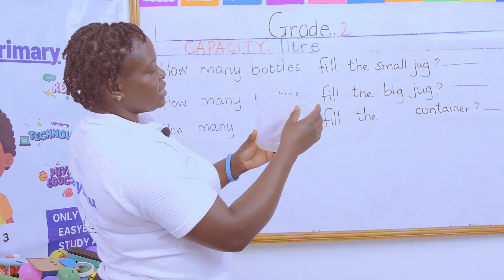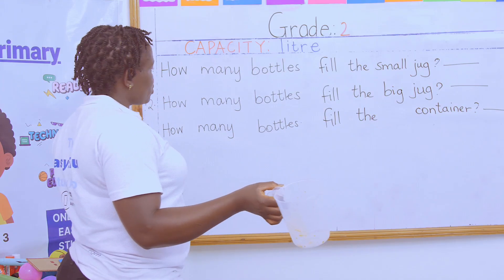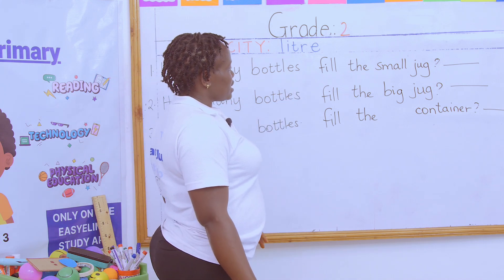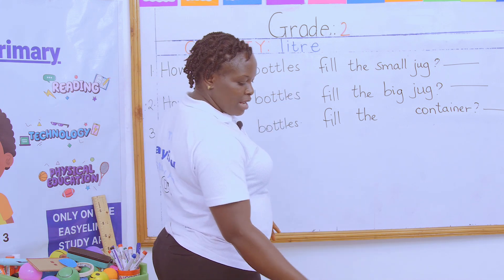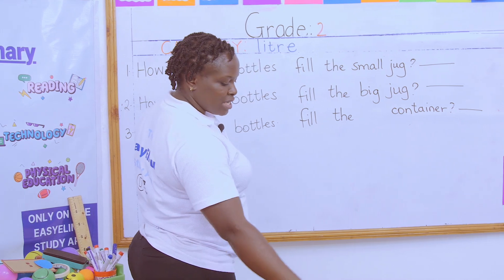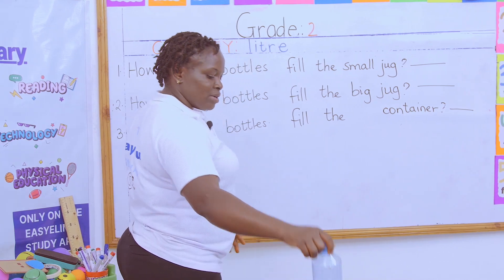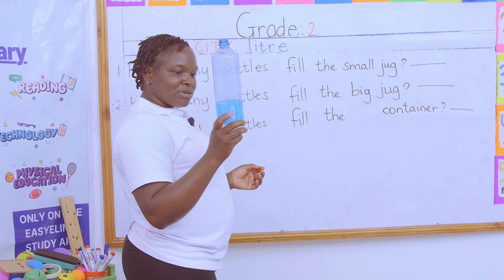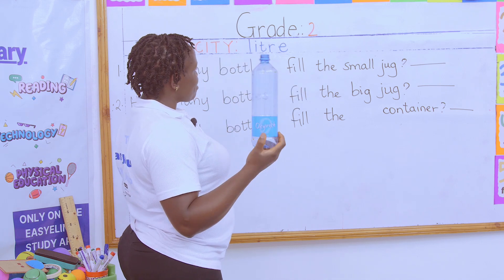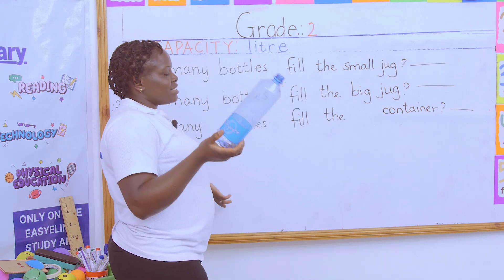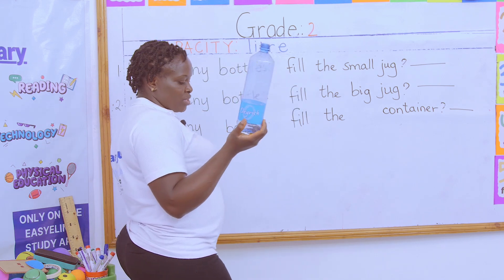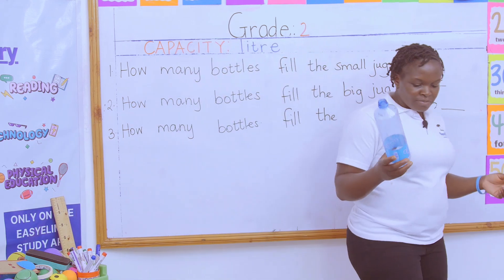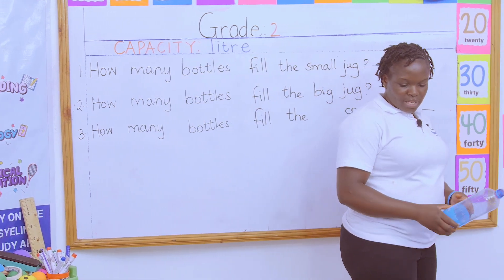This is a one liter jug. So we are being told how many bottles fill the small jug. Once we find out the number of bottles filling this small jug, it will be equal to a liter. This bottle is equal to a liter, and the units for measuring capacity is liters. So we want to find out how many bottles fill the small jug.